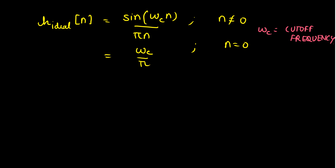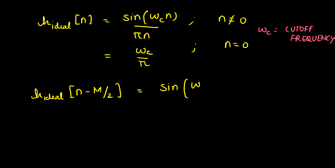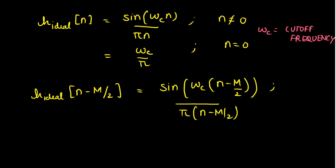Now if we obtain the delayed version of this filter, that is H ideal of n minus M by 2, what we have is sine of omega_c times (n minus M by 2) divided by pi times (n minus M by 2). This is valid for all values of n not equal to M by 2, and for n equal to M by 2 the value is omega_c upon pi.